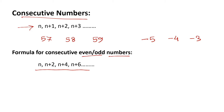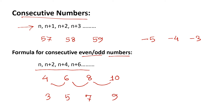Every consecutive number differs by 2. Even numbers: 4, 6, 8, 10 — differing by 2. Odd numbers: 3, 5, 7, 9 — differing by 2. For consecutive even or odd numbers, the formula is: n, n plus 2, n plus 4, n plus 6, all differing by 2.